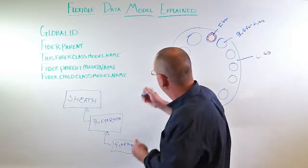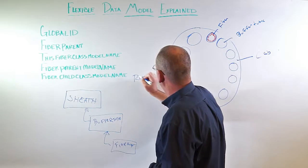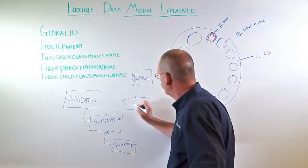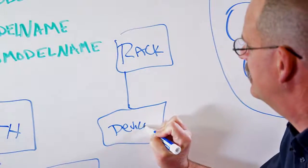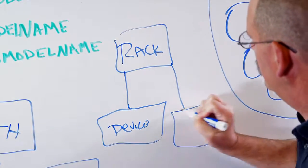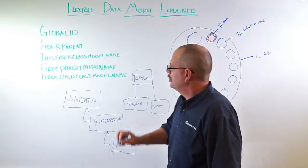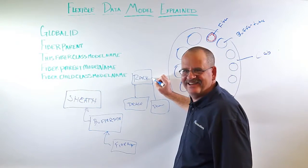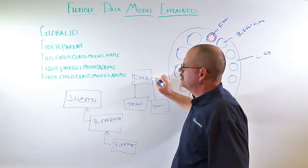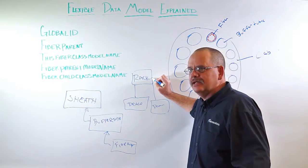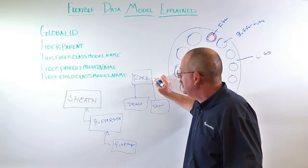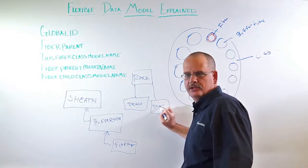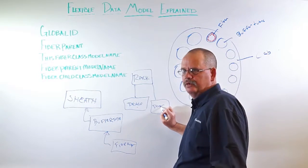In a rack, if you have a rack object, you can have two different related objects or actually two or more. You could have a device, you could have a panel, et cetera. So explicitly setting the child of a rack is not applicable. We've got to give it the multi-container, the fiber multi-container model name and then assign the fiber parent model name to the two sub-related objects.